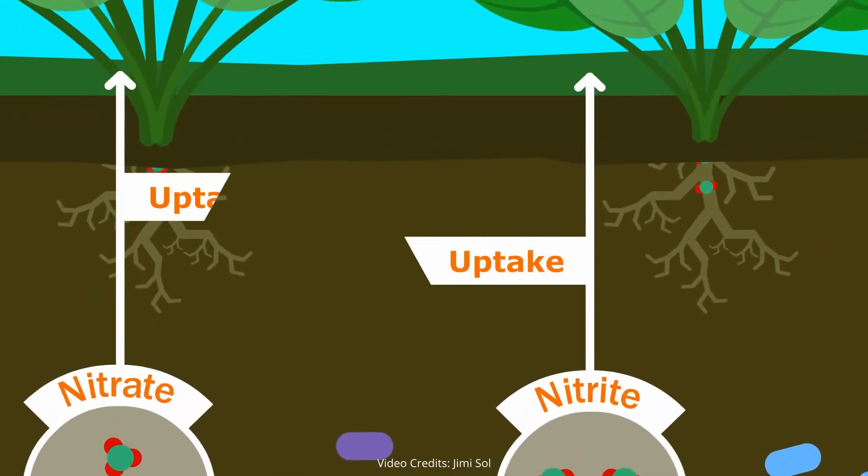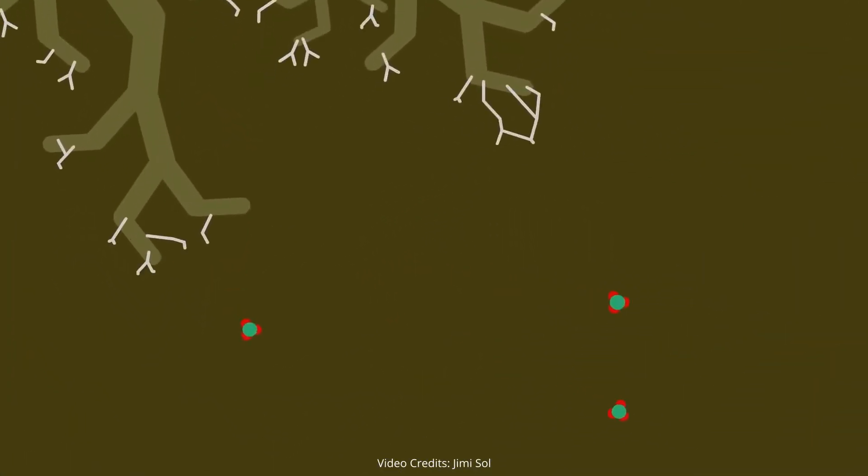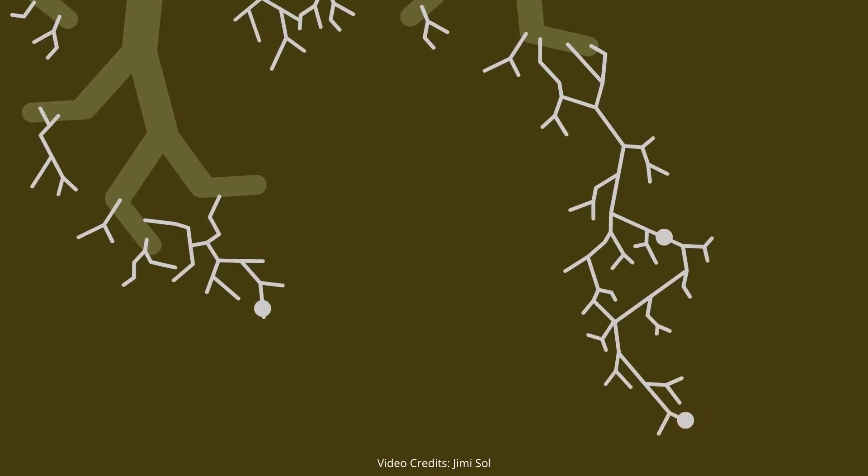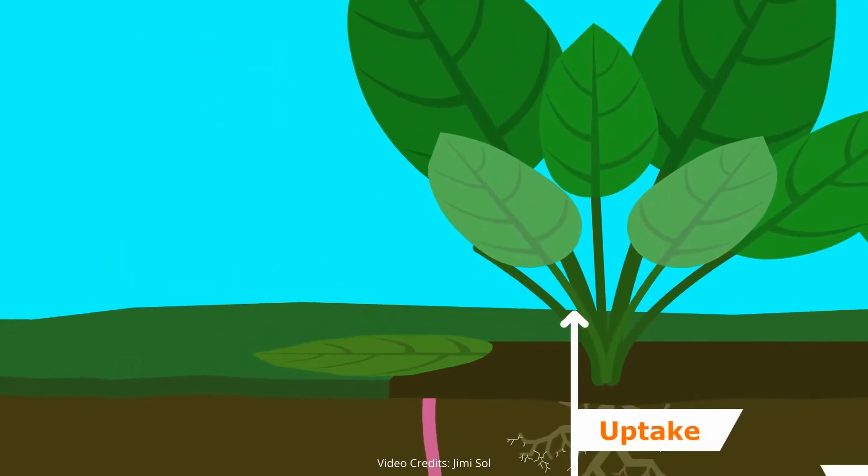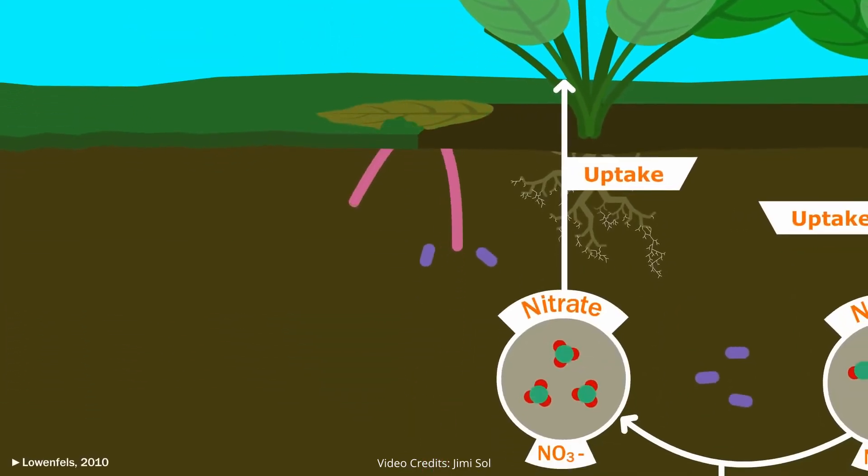Plants can take this up directly if it is near their roots, but they most often rely on strands of fungi that attach to their roots and bring nutrients to them in exchange for the sugars and carbohydrates the plant roots exude. Dead plant material is also rich in nitrogen and gets brought down with the help of worms, whose poop is a delicacy among nitrifying bacteria.